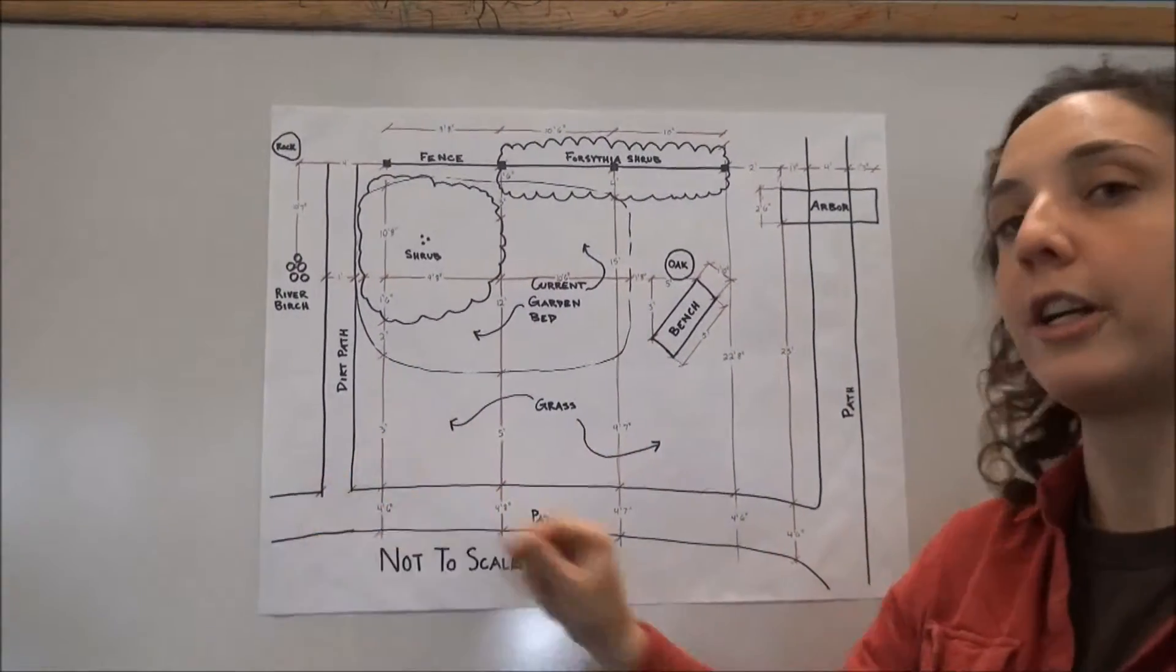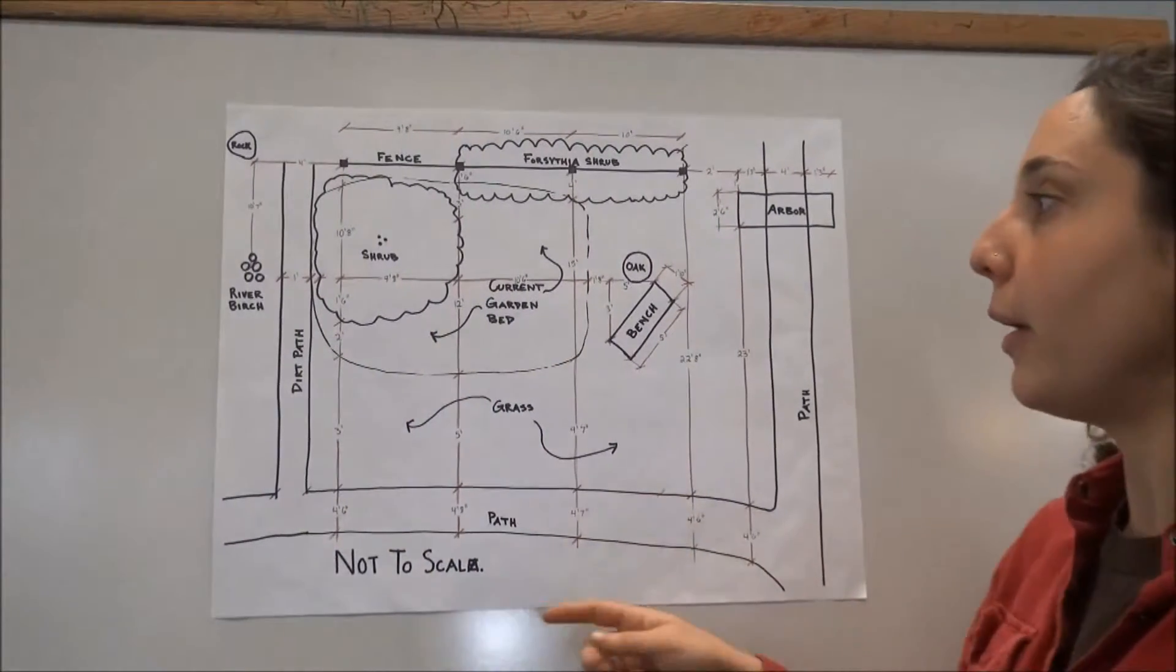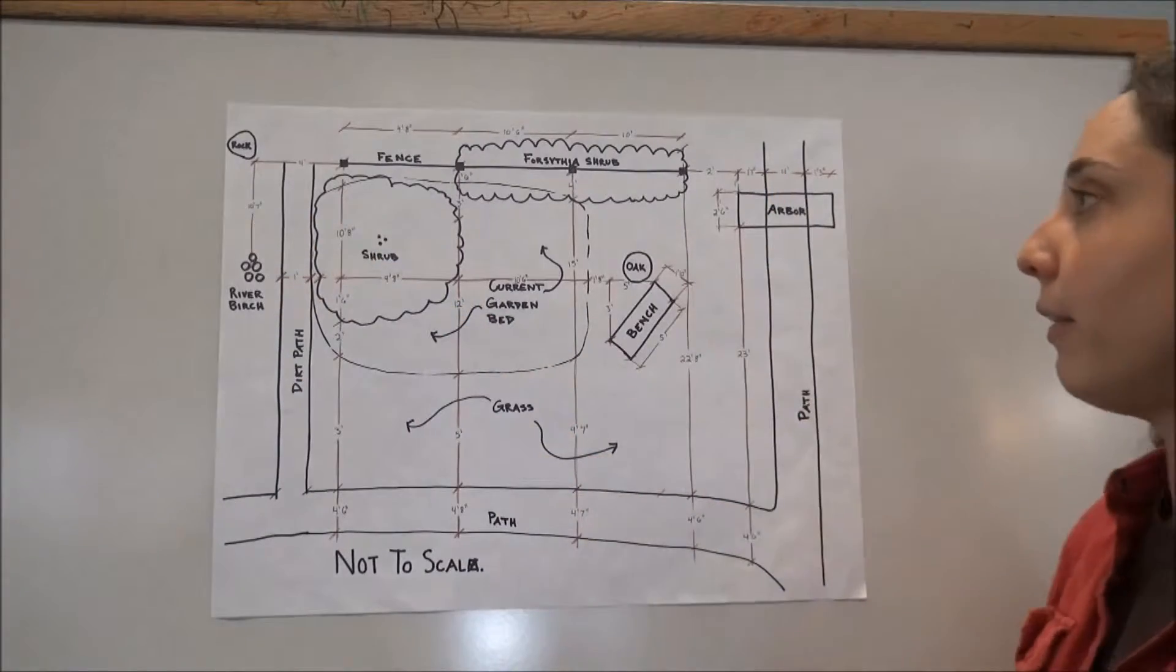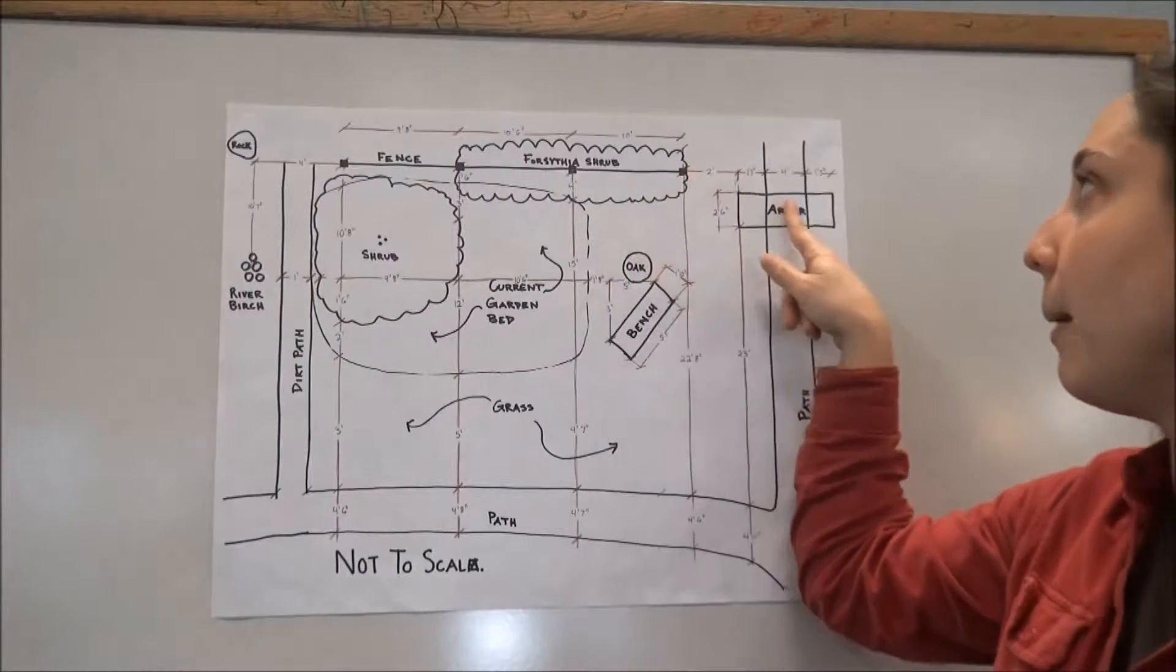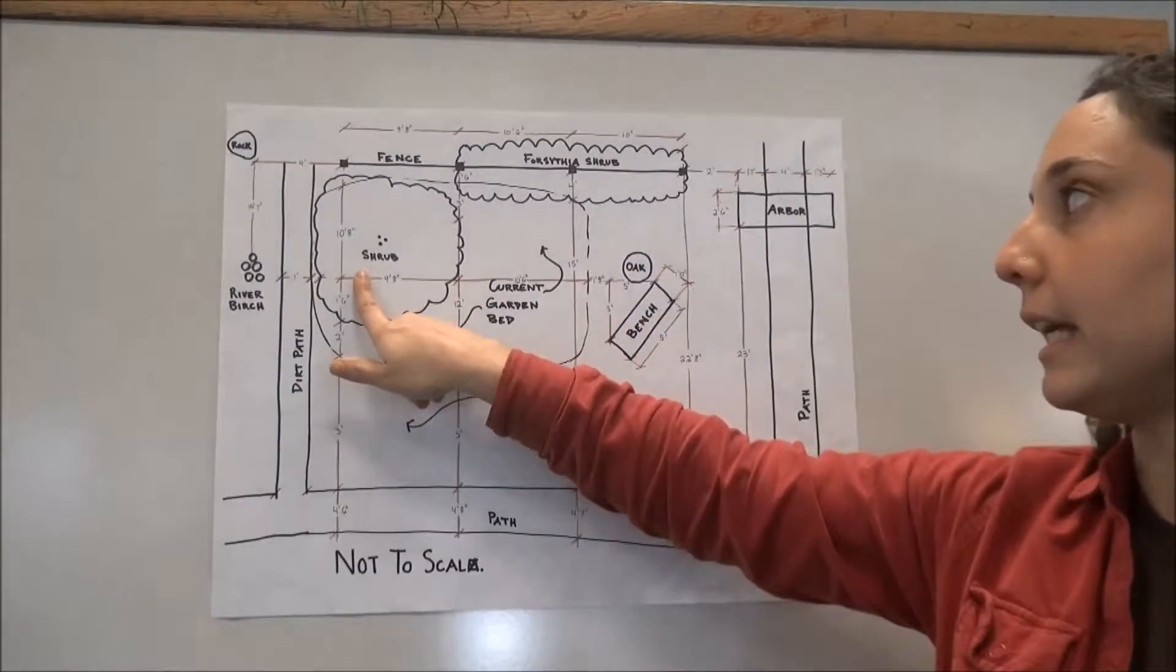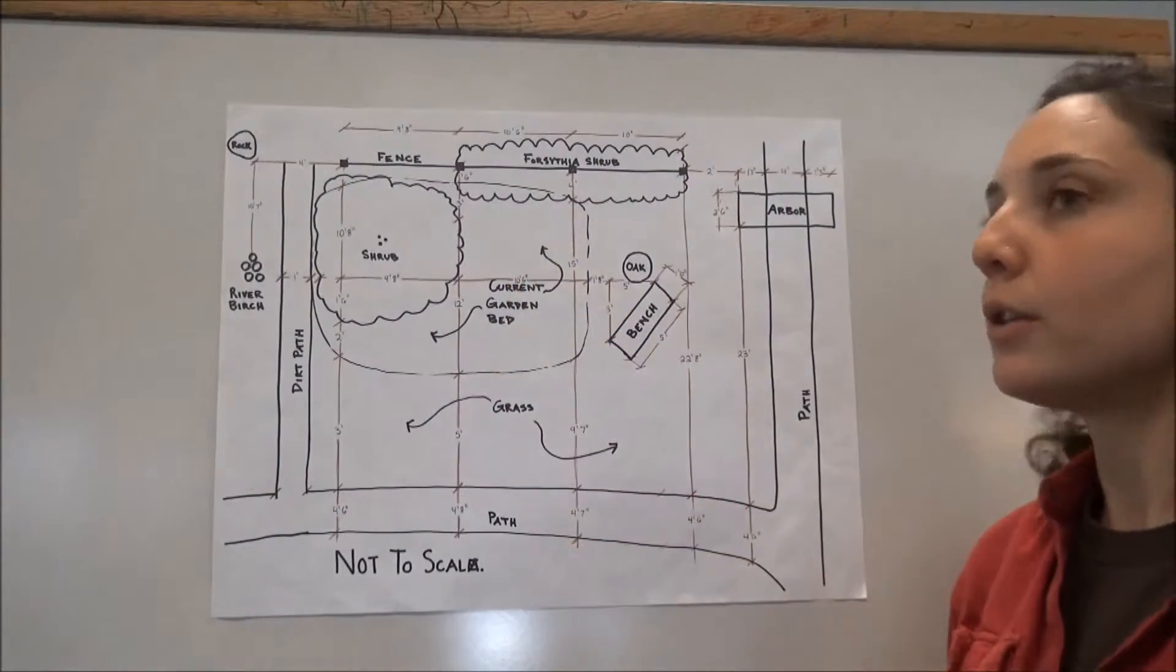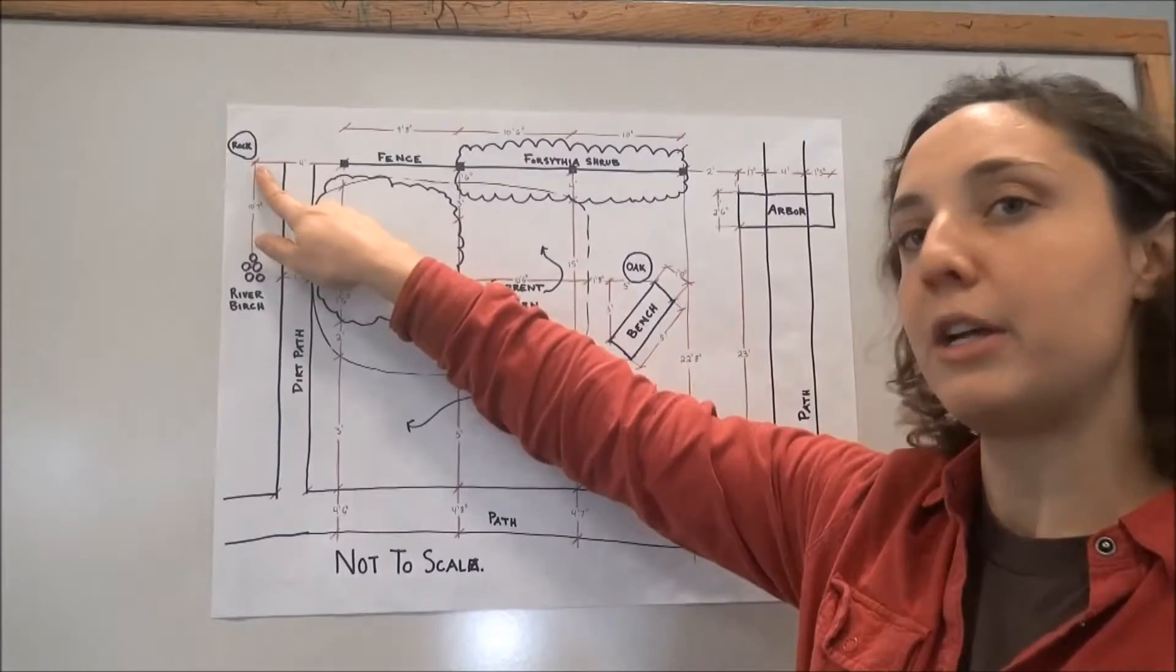This is not measured in any way and I'm just clarifying my measurements. So I have my path coming in all those directions, my fence which is what I measured off of, the arbor, and I have a bench, the oak, the azalea shrub, and the general shape of the garden bed.